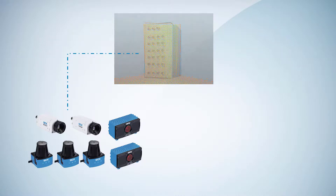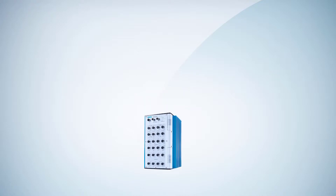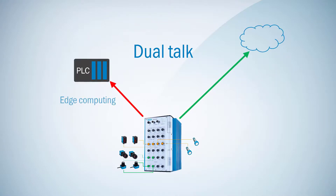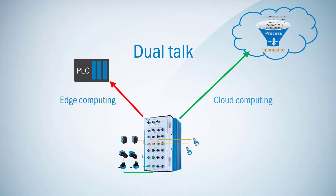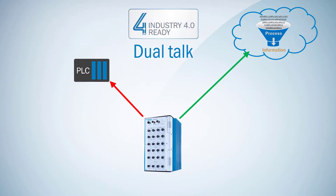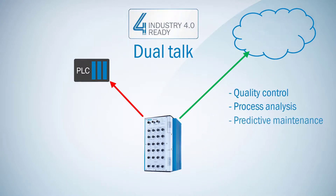Point clouds can be used, for example, for volume calculation and damage inspection. Dual-tock is the ability to provide parallel selected edge-computed sensor data to PLC and to cloud services, so that sensor data can be processed into information. This is an essential aspect of Industry 4.0 to improve quality control, process analysis, and predictive maintenance.